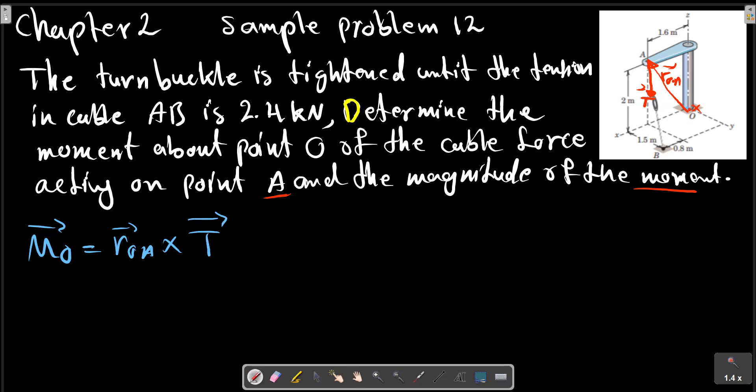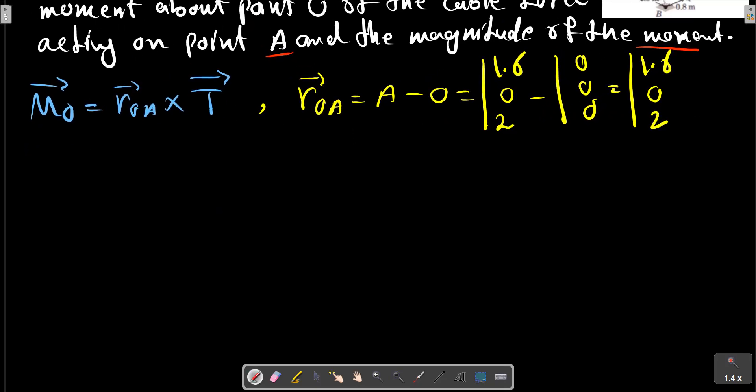At first we should update r_OA. r_OA = A - O. A is in the x direction 1.6, y direction 0, and z direction is 2. O is the origin [0, 0, 0].